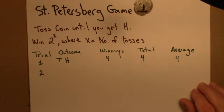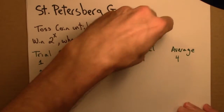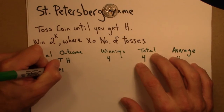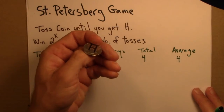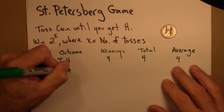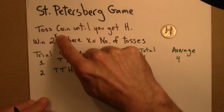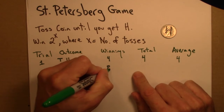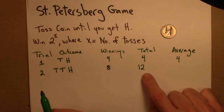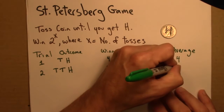Now let's play again. I toss and get a tails, toss again and get another tails, toss again and that was a head. So tails, tails, heads — that's 3 times. 2 to the 3 is 8. My total winnings now is 8 plus 4, which is 12. To get the average: I won $12 in 2 games, so my average winning was $6 per game.